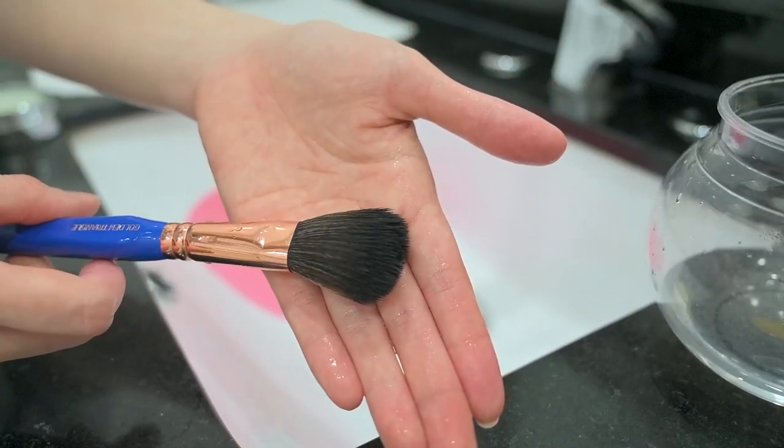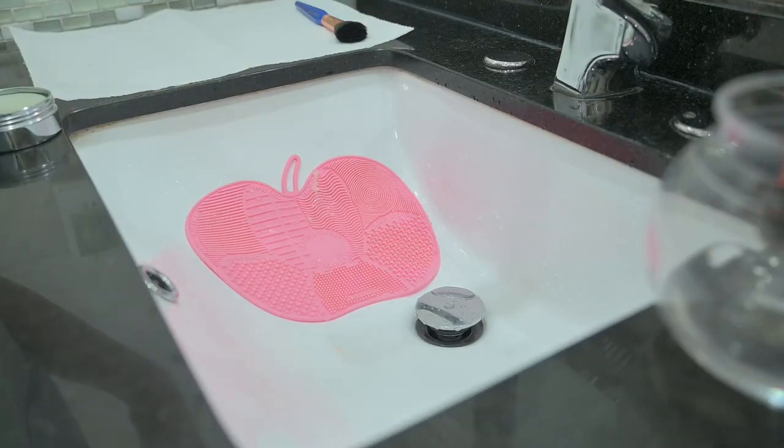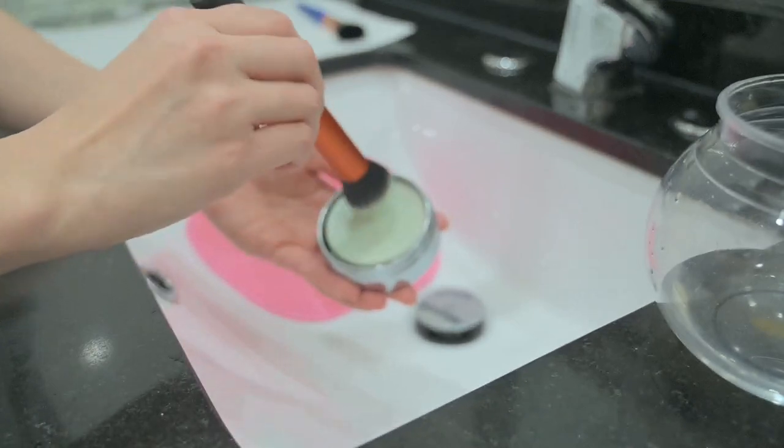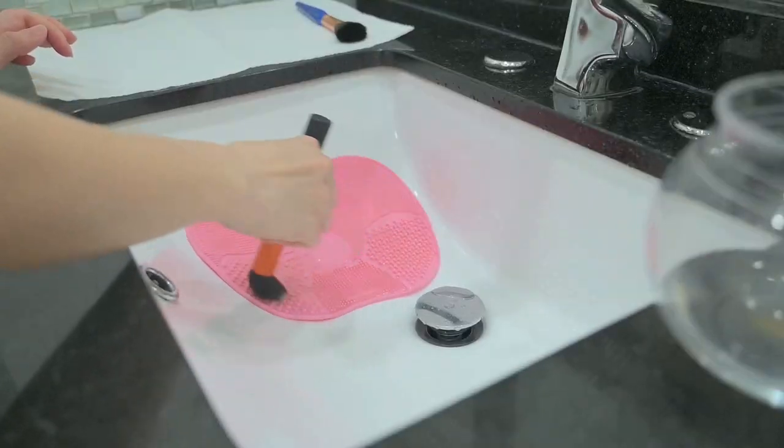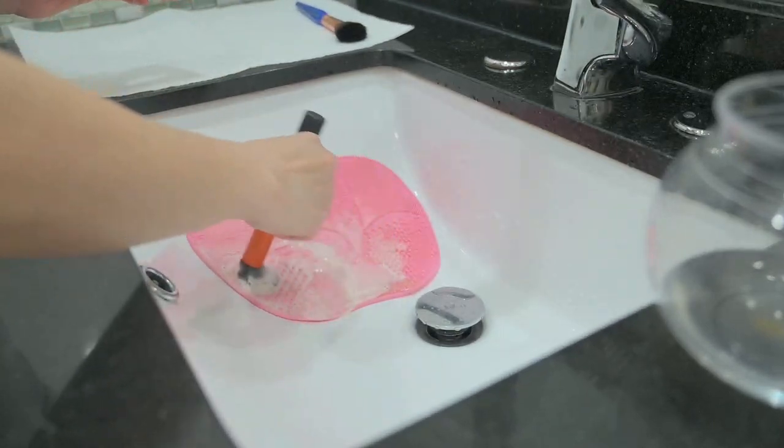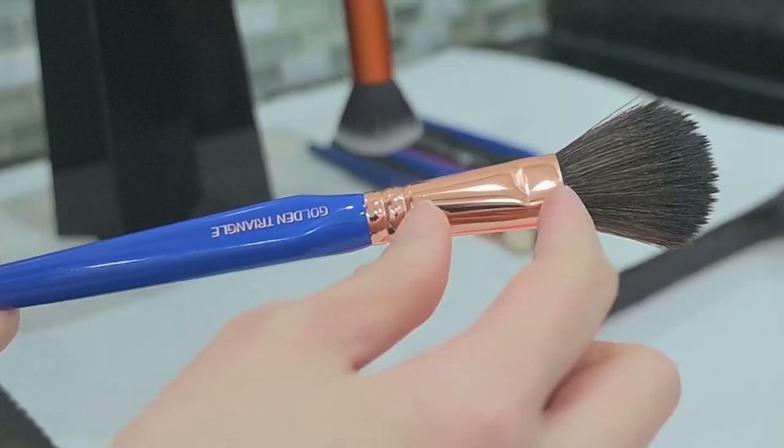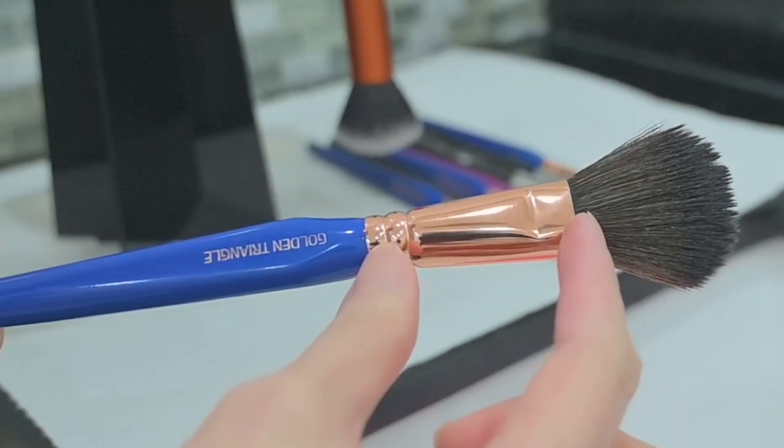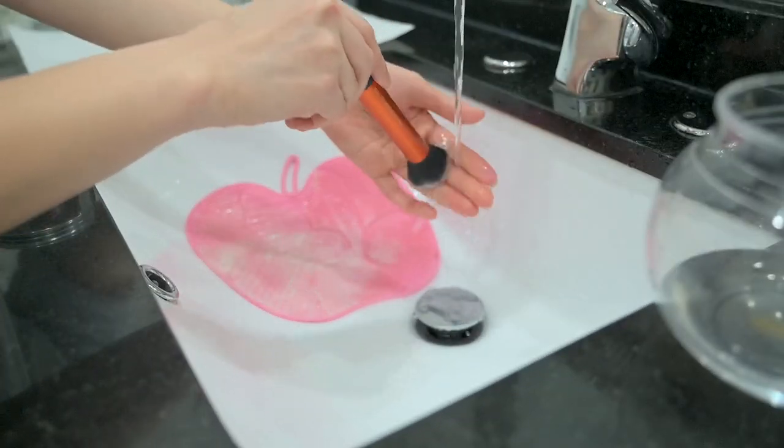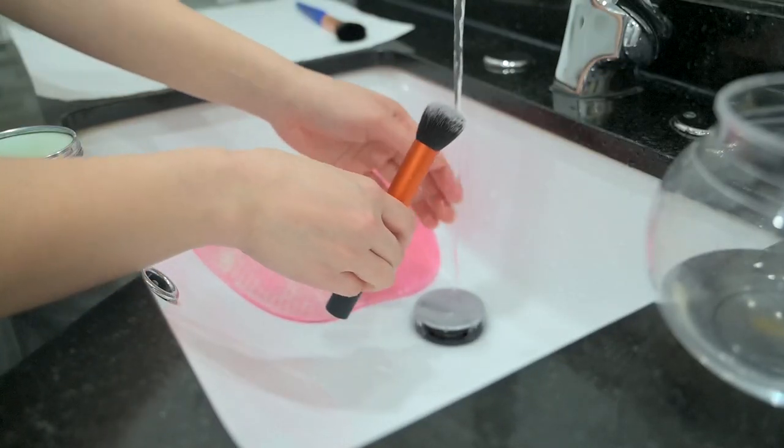Then I lay it flat on the paper towel. To avoid damaging your makeup brushes, it's important to clean them properly and avoid getting the ferrule or the metal part that holds the bristles wet, and never immerse the entire brush in water as water can loosen the glue that holds the bristles in place.